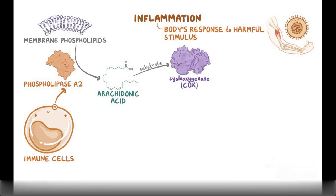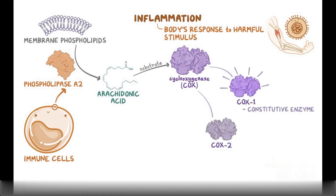The enzyme cyclooxygenase exists in two different isoforms, COX-1 and COX-2. COX-1 is a constitutive enzyme, meaning that it's always active.